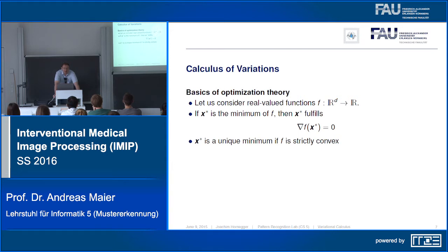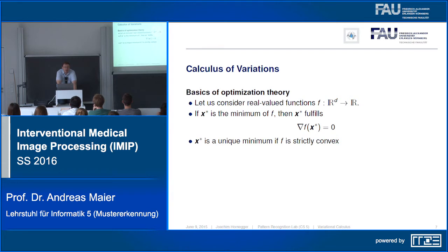A real-valued function has a minimum at x* if the gradient at x* is zero — all partial derivatives must be zero in all directions. If f is strictly convex, the minimum will be unique. We've been computing gradients and setting them to zero throughout this class whenever we seek to optimize a specific problem.